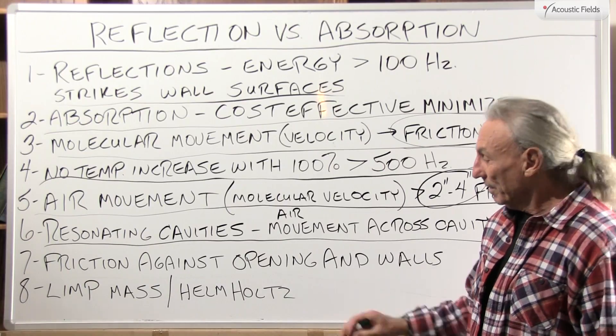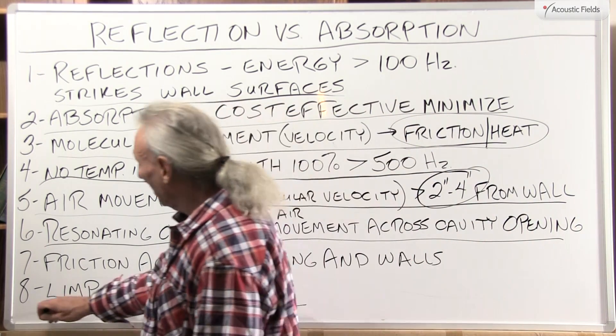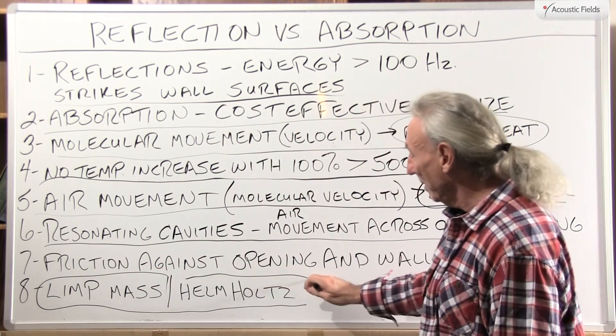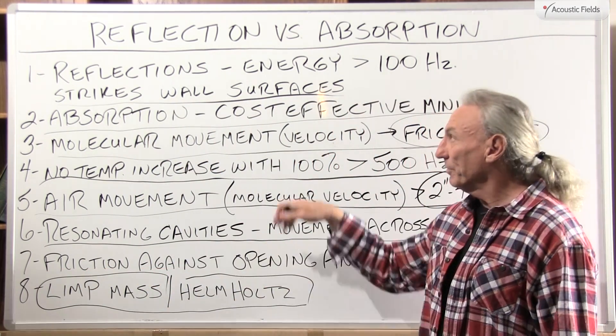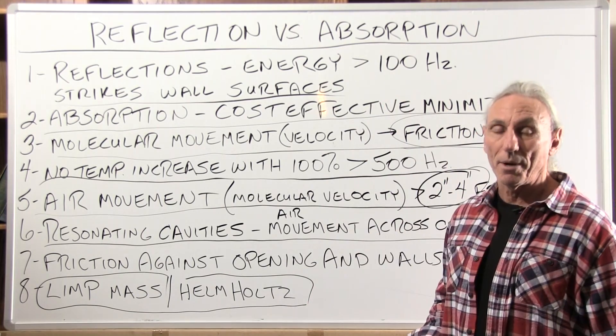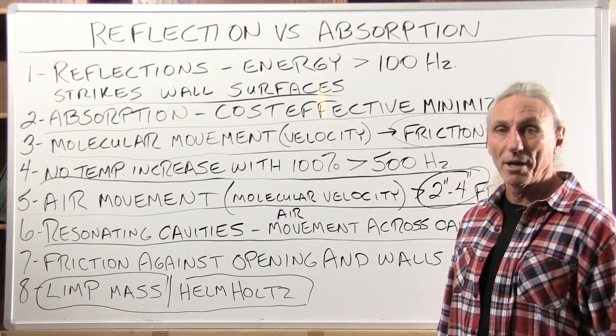So here are our two types we've discussed today: limp mass foam and the Helmholtz resonator — two types of absorption processes that deal with reflection.